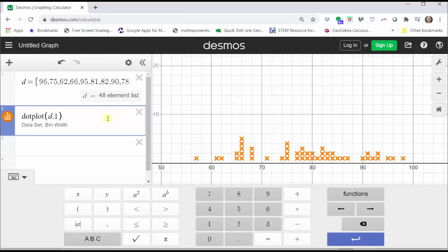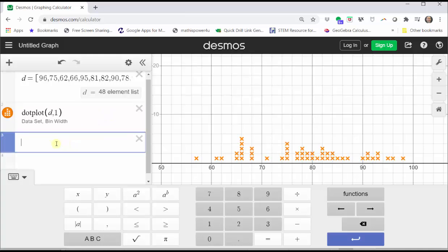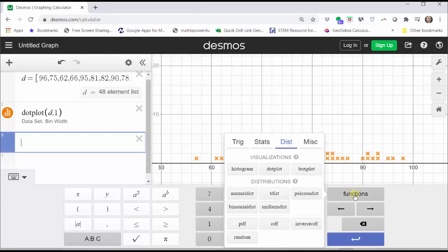Let's create the histogram. Let's click in cell three. We can either type in histogram, or go back to the Desmos keypad, click functions, under distribution, and click histogram.